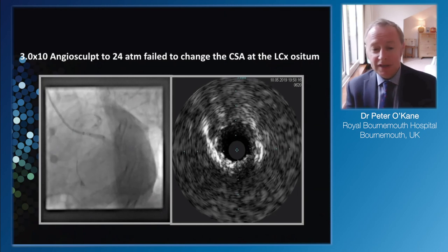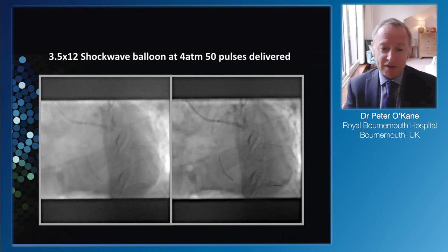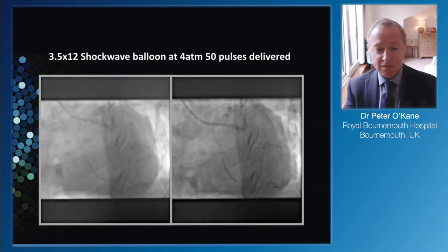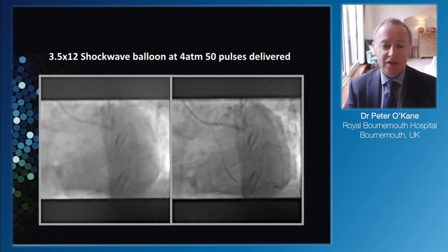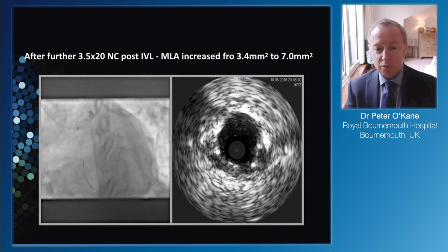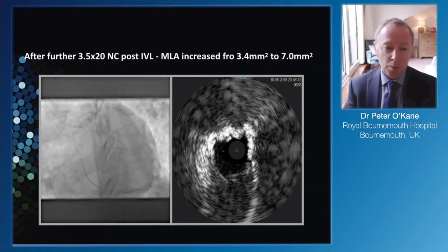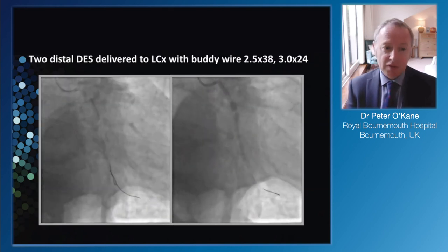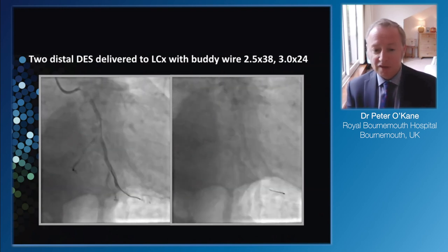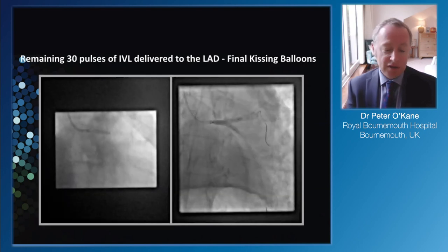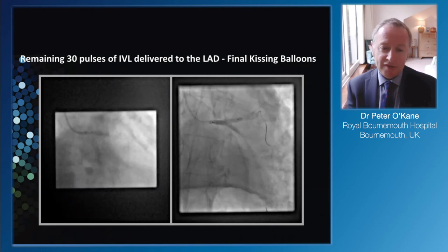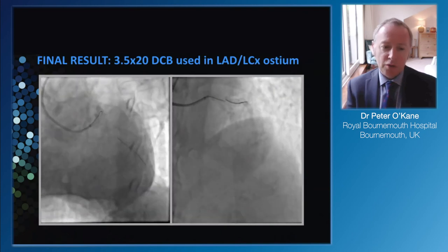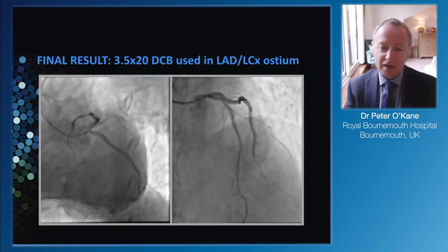The next step is to try a different device. I've taken Angiosculpt to high pressure, but in this case the degree of calcification beats the Angiosculpt and it just can't cope with it, so we need an alternative technique. Shockwave has recently been available - about six months - and here I think it's a perfect device. We go up to four atmospheres, deliver 50 pulses of energy, and it's actually pretty effective. You don't necessarily see the change on the angiogram, but it directs energy into that tissue and causes multiple fractures. After another non-compliant balloon, we get the lumen up to about 7 millimetres squared - a big improvement. I put some distal stents in to de novo disease using buddy wire technique. Finish off with kissing balloons. I also use the IVL balloon in the LAD to make sure we don't waste any energy given there was under-expansion there too. Final kissing drug-coated balloons - no new stents. The final result, whilst not perfect, is certainly better than what we started with and hopefully will provide some durability.